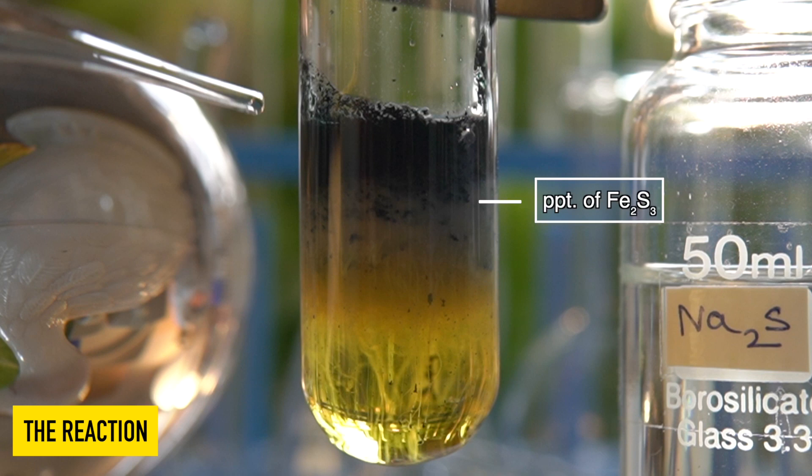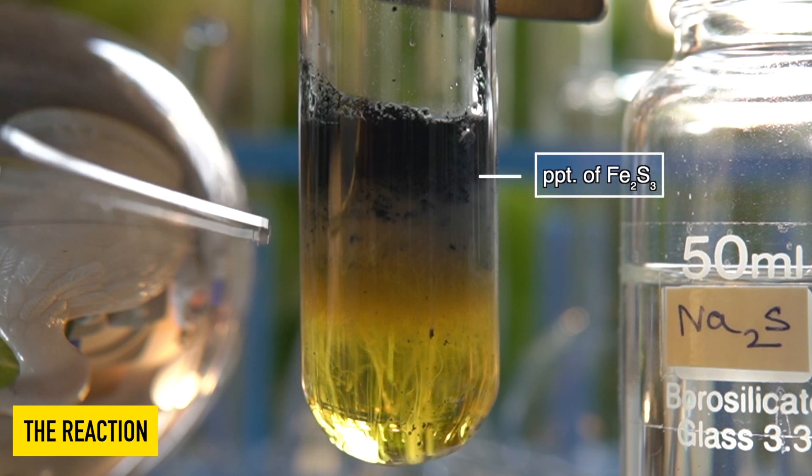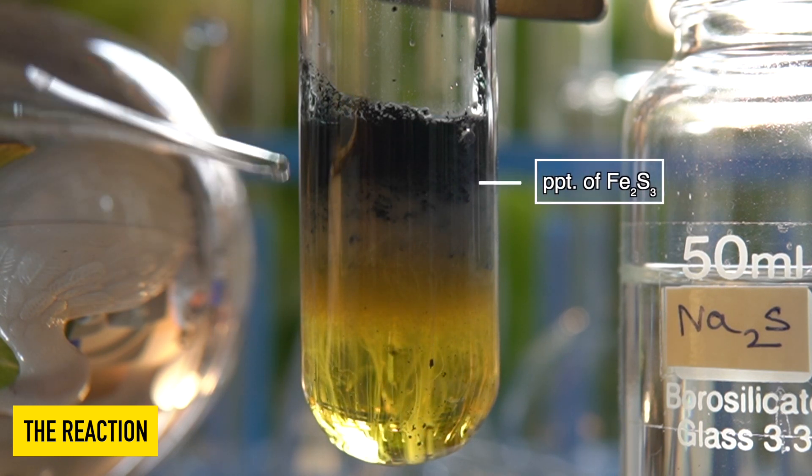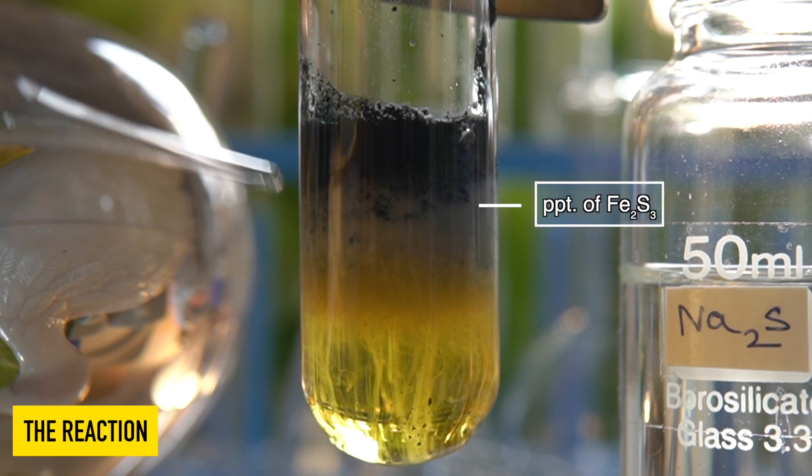The black insoluble precipitate that has been formed inside the test tube is nothing but iron 3 sulfide.